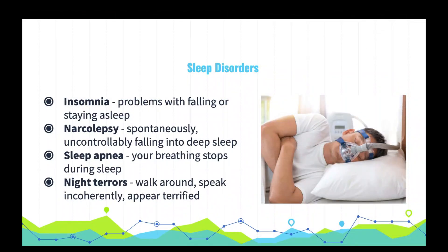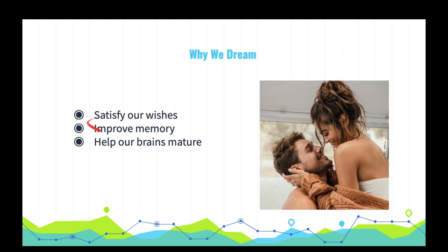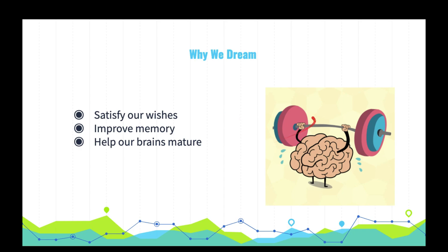Let's make a few comments about why we dream. We dream to satisfy our own wishes, to express unconscious desires that we wouldn't want to express directly — like making out with our secret crush. We dream to improve memory, since dreams help us sort and fix experiences into our memories.